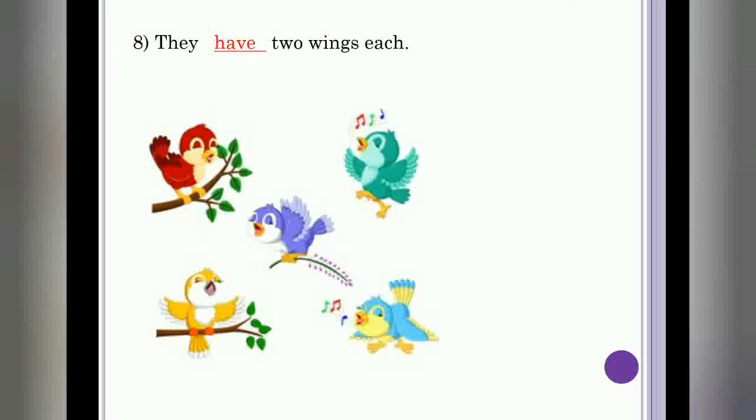Next, they have two wings each. They, after they, I, we, you, we should use have. That's why here we have used have to show the belongings.